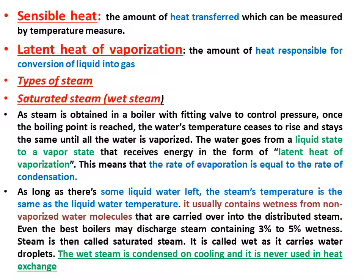What is the difference between sensible heat and latent heat of vaporization? Sensible heat is the amount of heat transferred, which can be measured by temperature measurement. While latent heat of vaporization is the amount of heat responsible for the conversion of a liquid into gas.